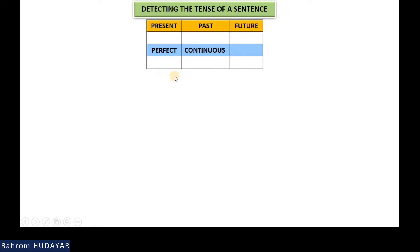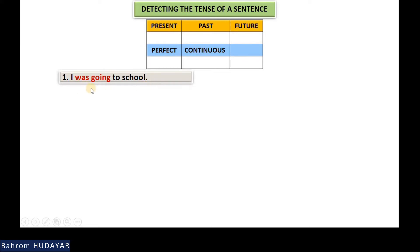Let me show you how you are going to find the exact tense of a sentence. Let's begin with the example sentence: 'I was going to school.' Suppose you make this sentence in your native language and you want to say it in English. We have to do this through English because I don't know your language, but I hope you understand the system.